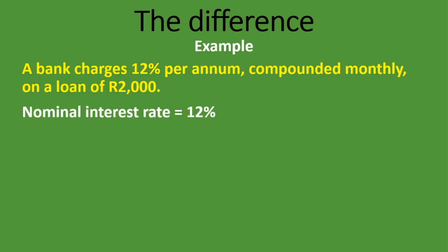What is the nominal interest rate? The nominal interest rate is the stated interest rate, which we are told is 12% — that is the nominal, simple interest rate. Now we know there is compounding and it's compounded monthly. So that 12% is per annum but compounded monthly, meaning we are paying interest on interest — and that is what compounding means.